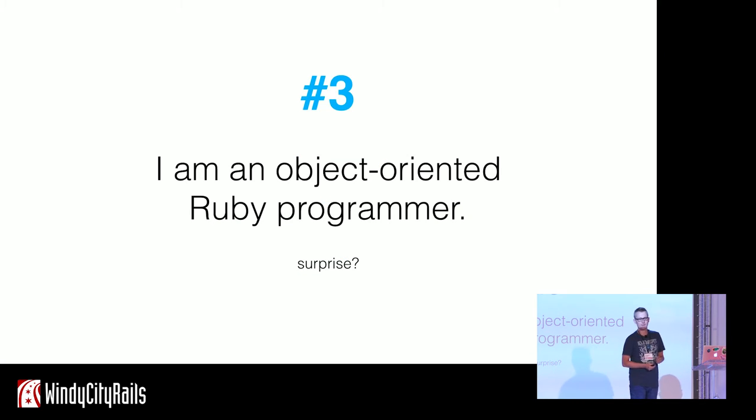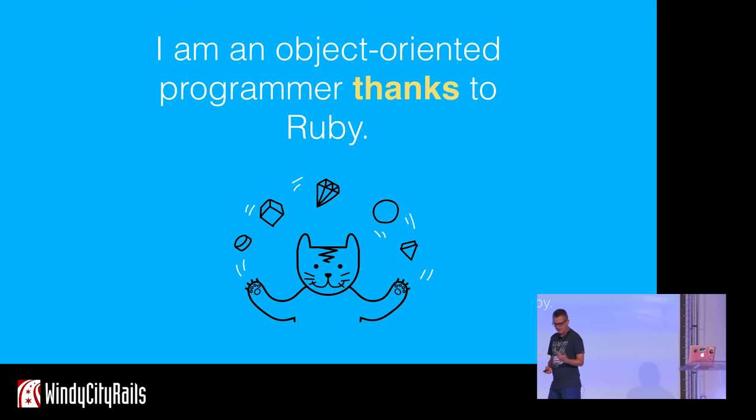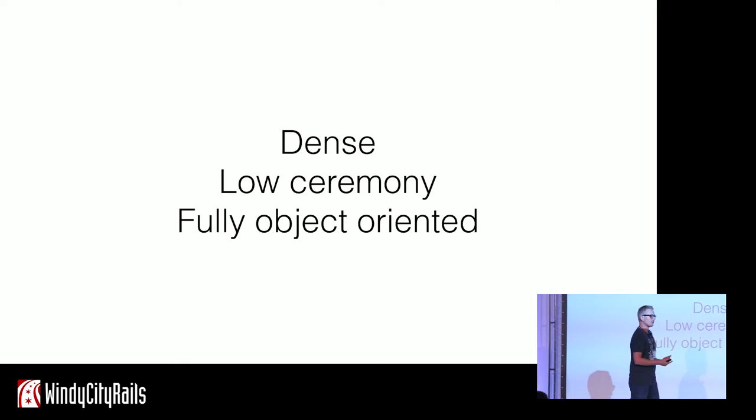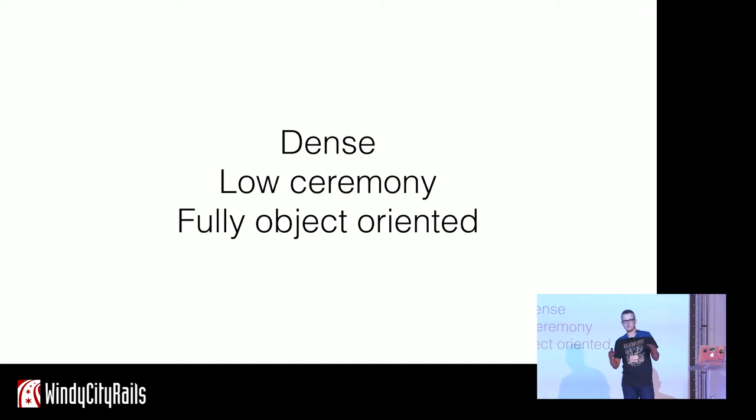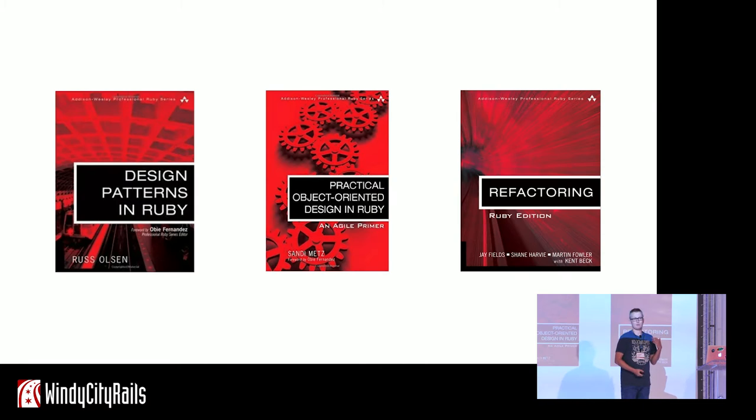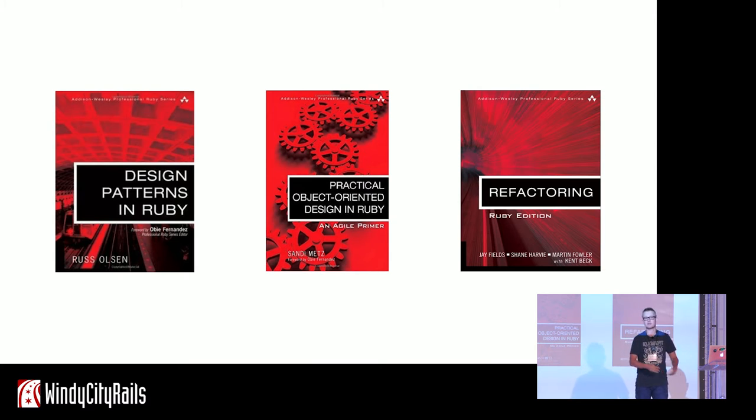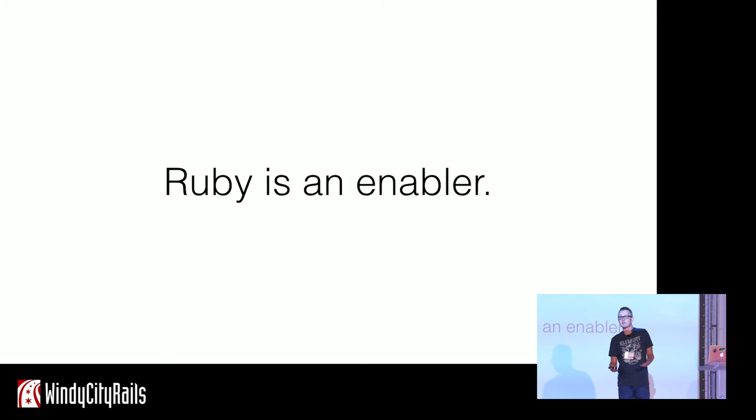And fact number three, I am an object-oriented Ruby programmer. Which I guess is not really surprising. So let me put it differently. I like to think that I am an object-oriented programmer thanks to Ruby. And that's because Ruby is a very dense and very low ceremony language. It's optimized for our happiness and productivity, which makes it a perfect playground for experimenting and learning broader programming concepts. In a sense, I think Ruby is a great enabler.